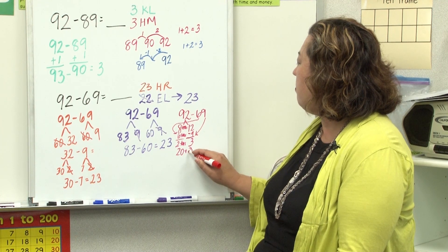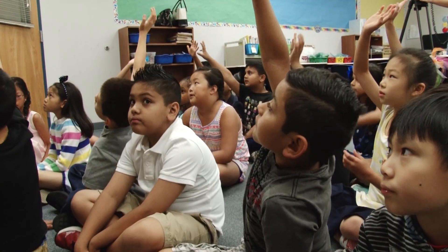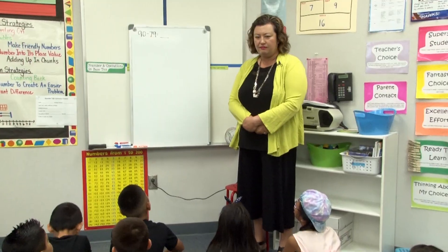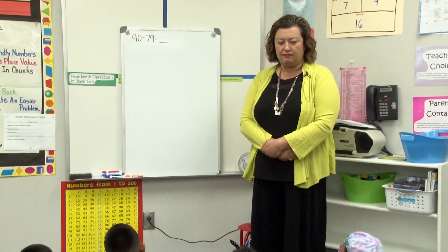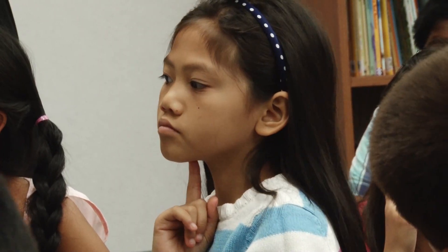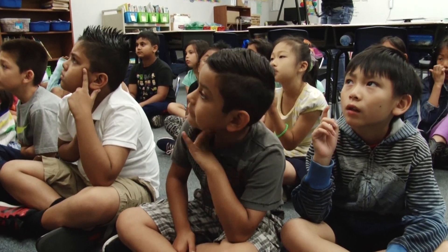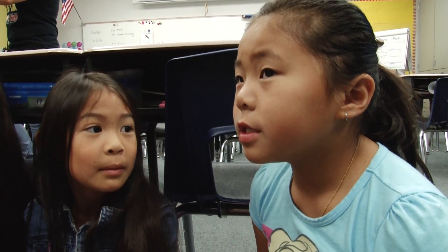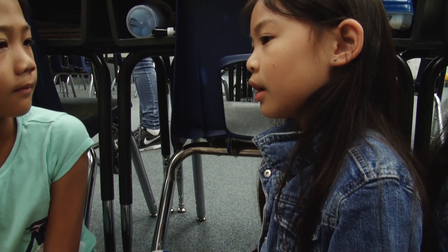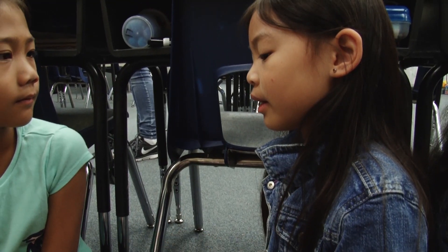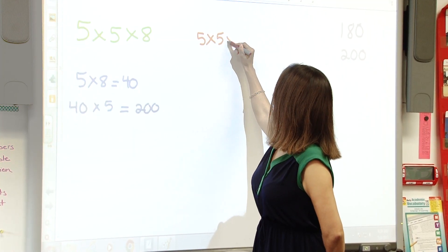Number talks is something that I learned through math generation training. I write one of the problems up, and then the students sit and they have to think about the strategy that they would use to solve the problem and come up with an answer. The students talk with each other first before they share the strategy out loud to me. So when I call on someone, they've already had a chance to speak. So today we used multiplication with three factors.